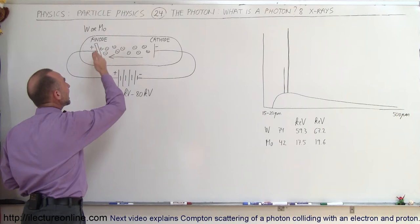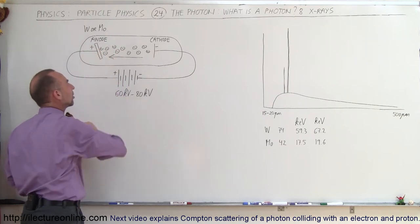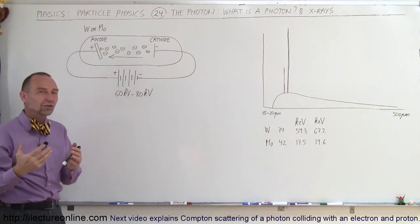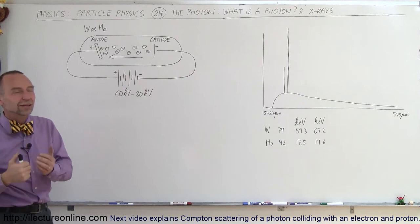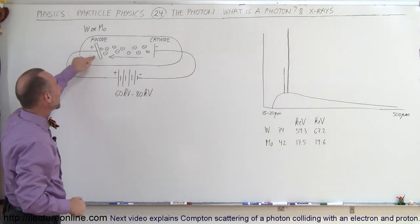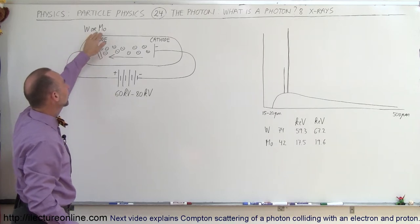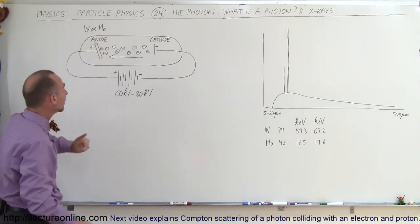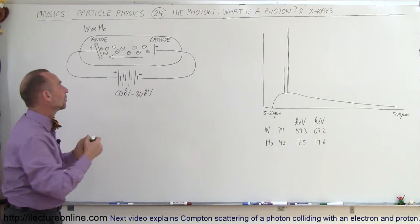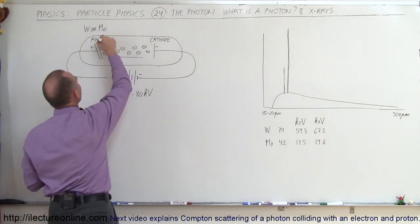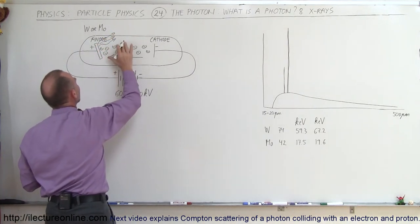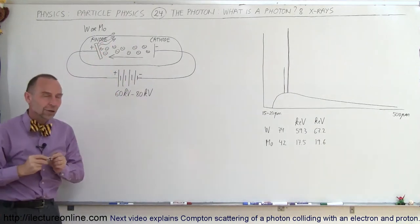So, by the time the electrons reach the anode, where they impact on the target, they will have energies of 60,000 to 80,000 electron volts. And so, when they impact on the anode, typically made either out of tungsten or molybdenum, then they'll produce x-rays from the impact of these electrons into the target.